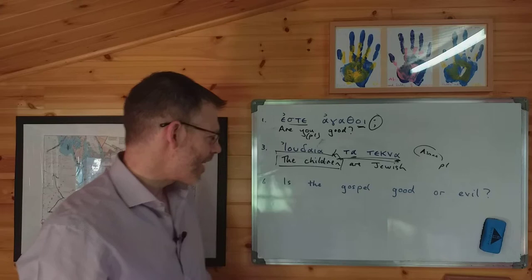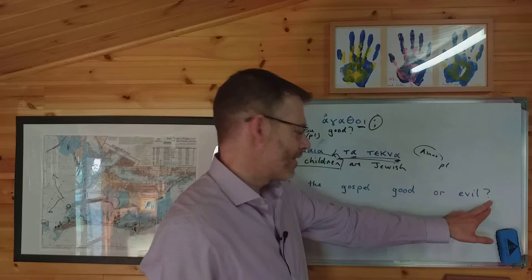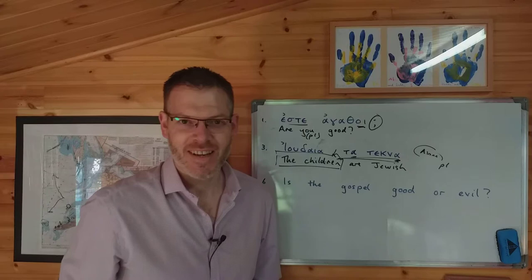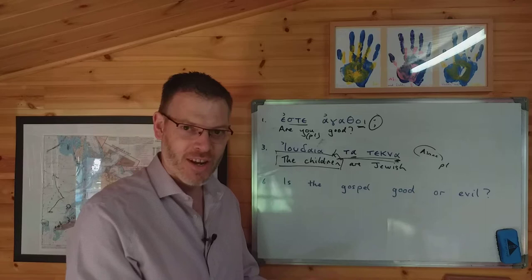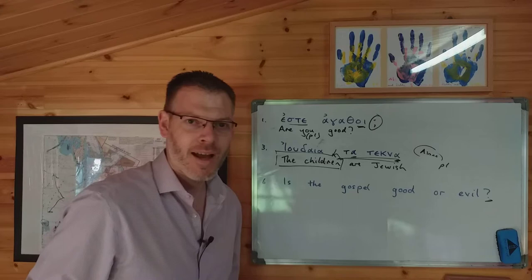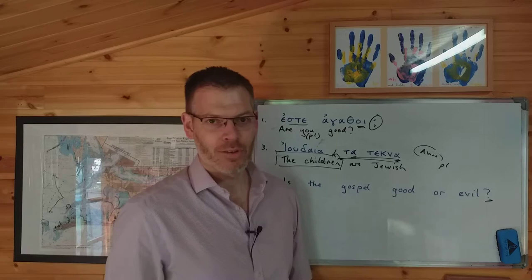Now let's look at the tricky one, number six: 'Is the gospel good or evil?' There are a number of things which make this a little bit complicated. First, it's a question. Second, there are two adjectives, and it's slightly irritating to figure out what you're supposed to do with them and how they relate to the verb. Remember the first hint when translating a question: forget that it's a question, translate it as a statement, then turn it back into a question afterwards. Let's try to translate the statement: 'the gospel is good or evil.' Let's reduce the complexity and just try translating 'the gospel is good.'